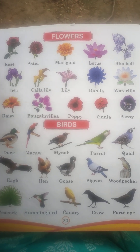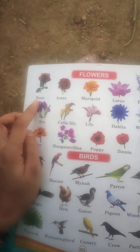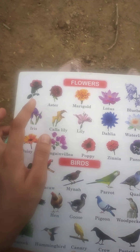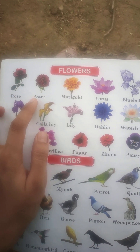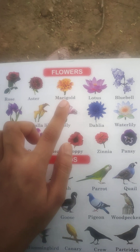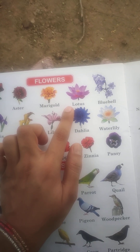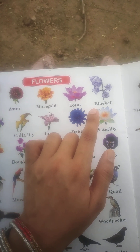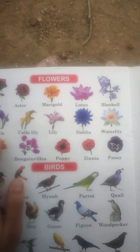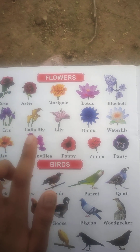Okay, repeat both again. First flower is rose. Next aster. Next marigold. Next lotus. Next bluebell. Next iris. Next calla lily.